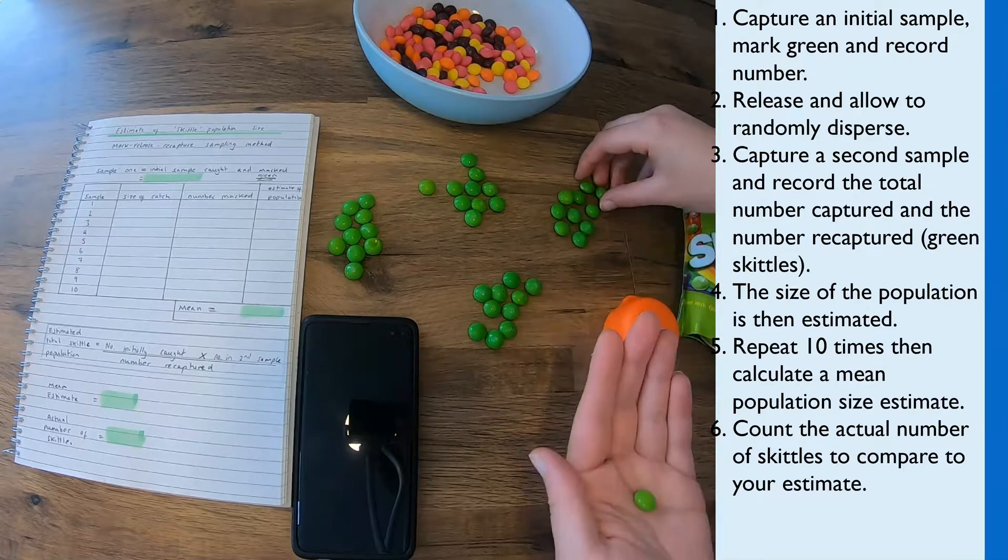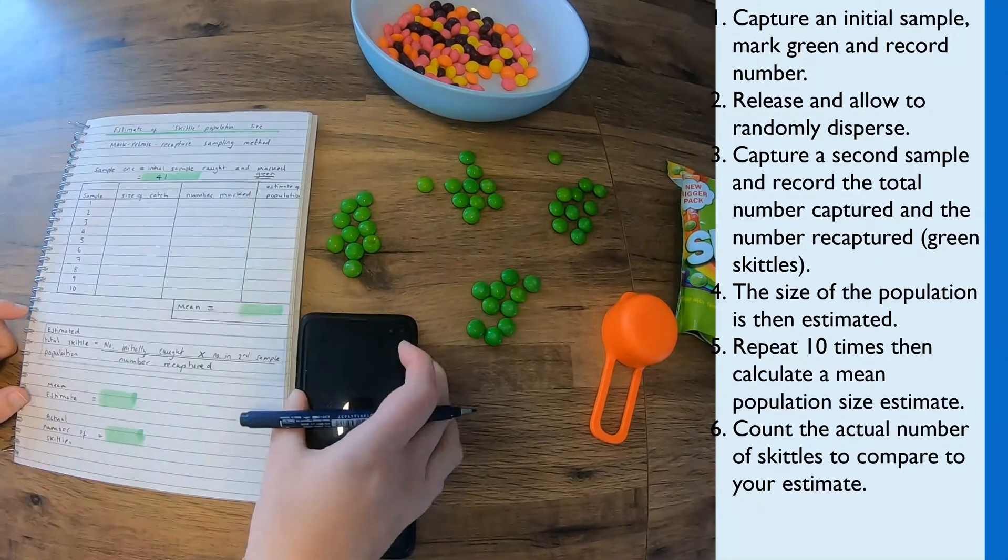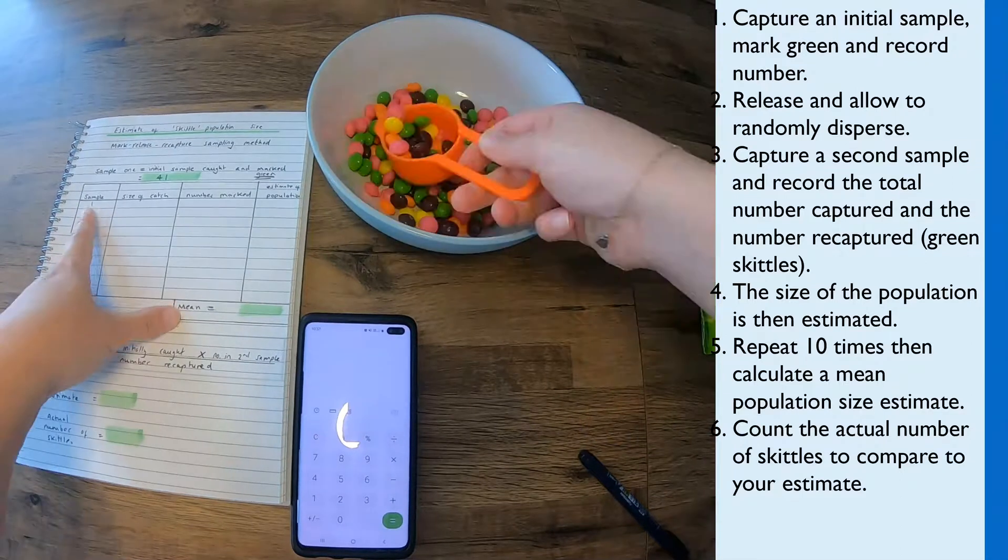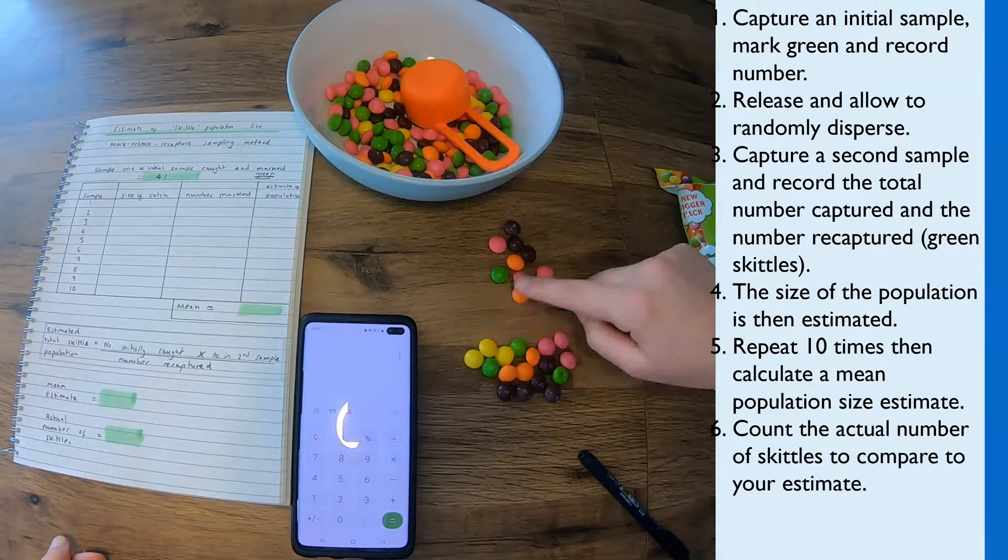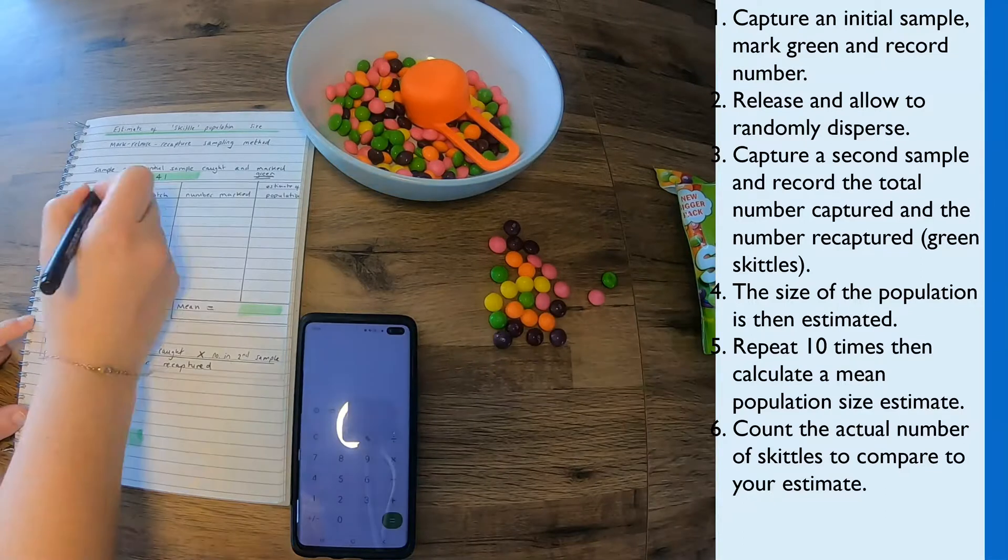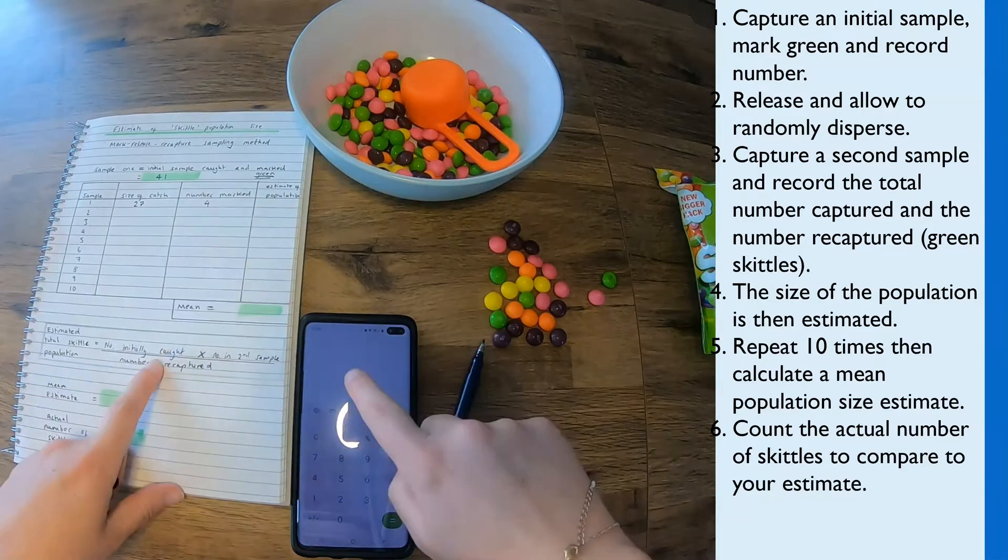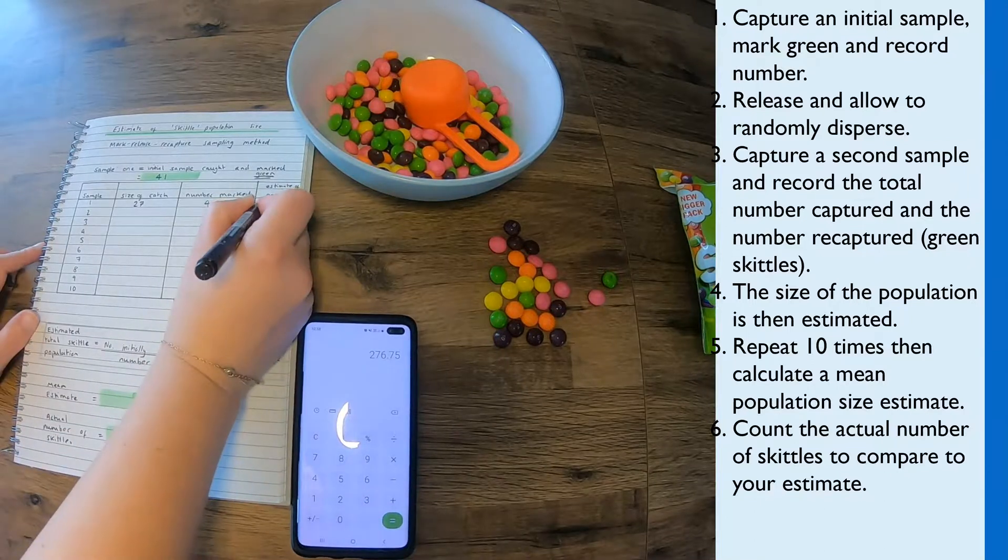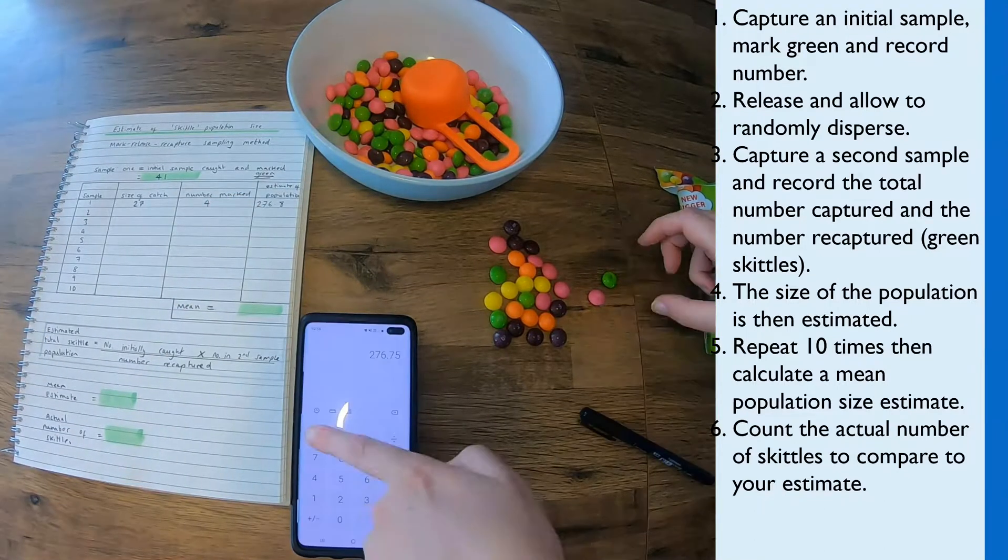So imagining that's the sample I initially caught, marked them green, and I had 41 greens. Then I mixed it up to let them evenly disperse, took a second sample, counted how many in the sample, and I had four green, so those are the ones that were recaptured. So using the equation, that gives me the first estimate of 276.8.